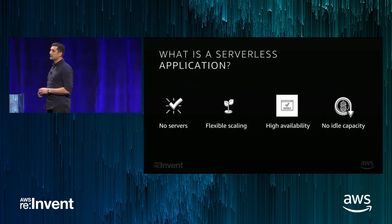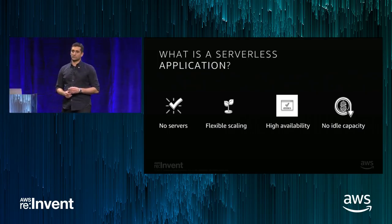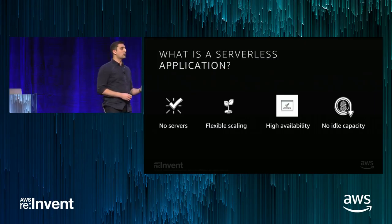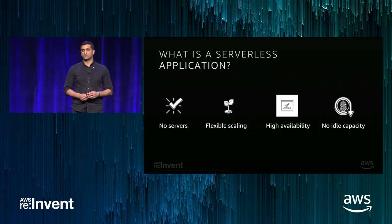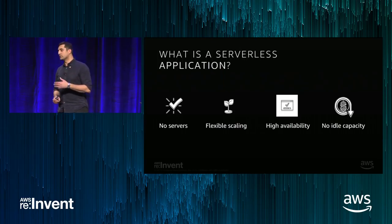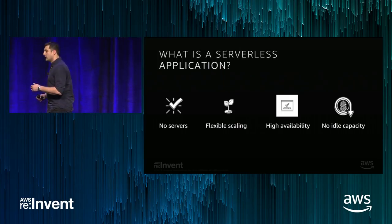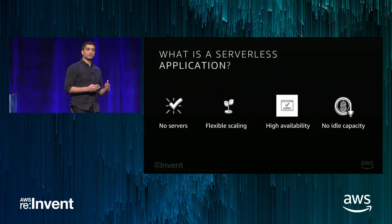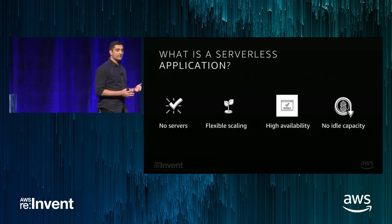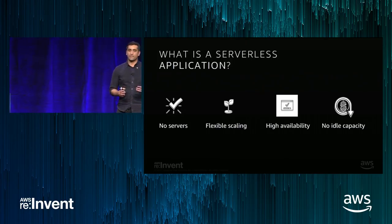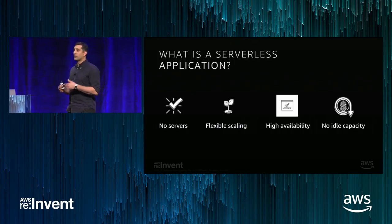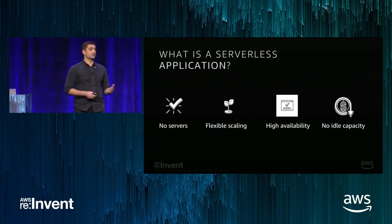Let's take a step back and talk about what is a serverless application. A serverless application is one that does not require you to provision, administer, or manage servers. It enables you to focus just on the business logic and the customer scenario you want to solve without having to think about a fleet of servers or purchasing capacity for peak scale. Instead, you let AWS Lambda, API Gateway, and other AWS services provide you the availability and scale required to meet your customer's needs.